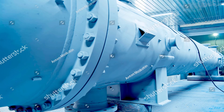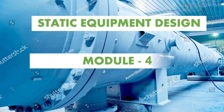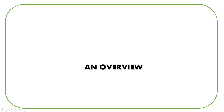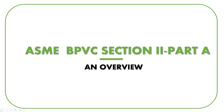Hello. Welcome to the Static Equipment Design Course, Module 4. In this module, you'll get an overview of the ASME BPVC — that is, the Boiler and Pressure Vessel Code — Section 2 Part A, which covers various aspects of the materials used in the construction of pressure vessels.